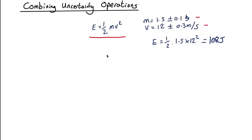But what is the uncertainty in this? We've got three things we have to do. We have to use the raising to a power on the v squared. We have to use the multiplying on the m times v squared. And we have the multiplying by a constant.